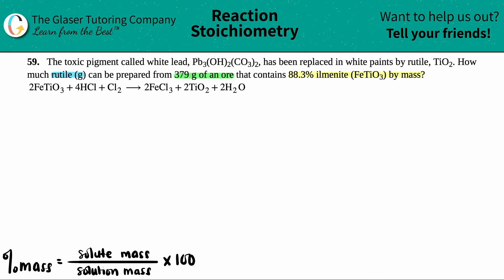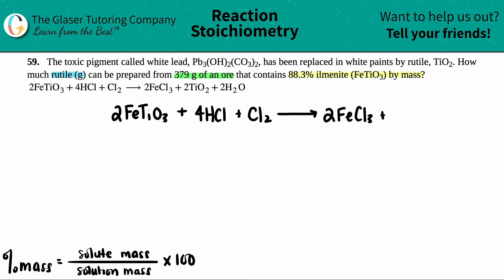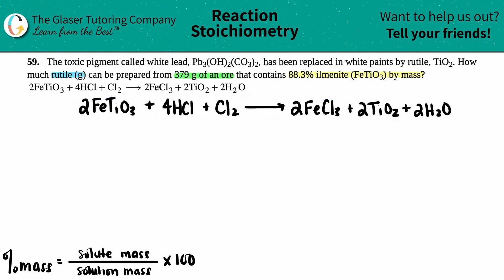They give us an equation. I'm going to write this a little bigger. We have 2 FeTiO3 — that's the ilmenite — plus 4 HCl plus Cl2 yields 2 FeCl3 plus 2 TiO2 plus 2 H2O. Since they added coefficients, I'm going to assume that it's already balanced.